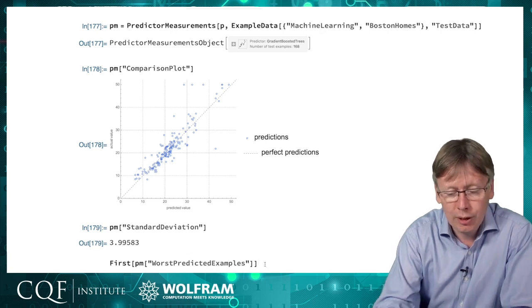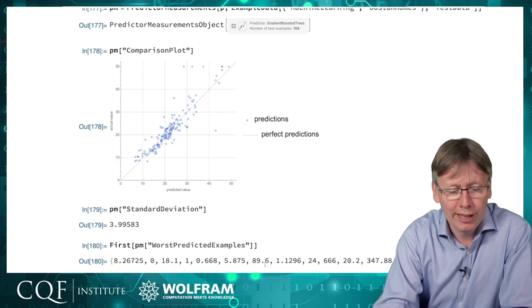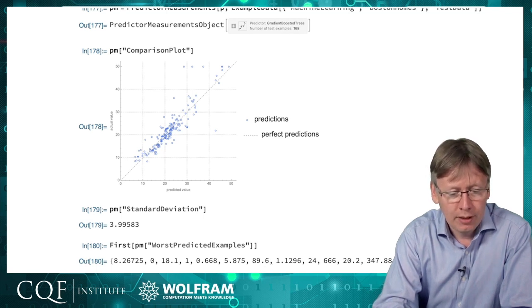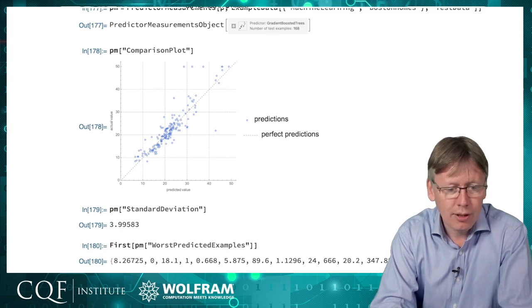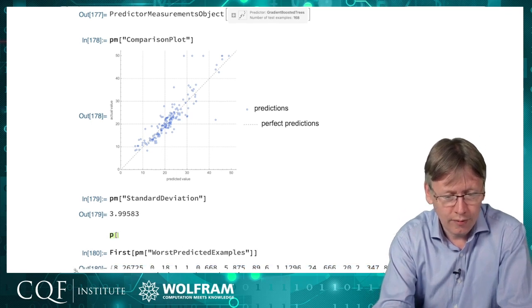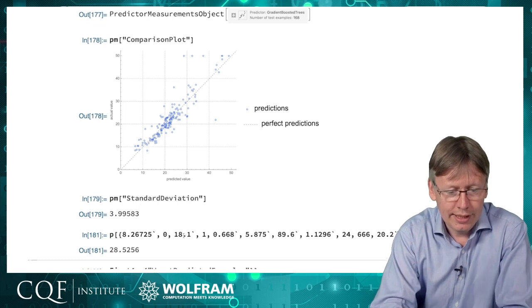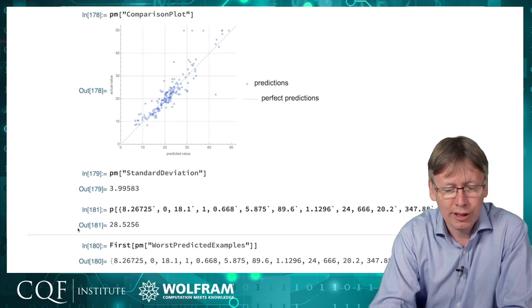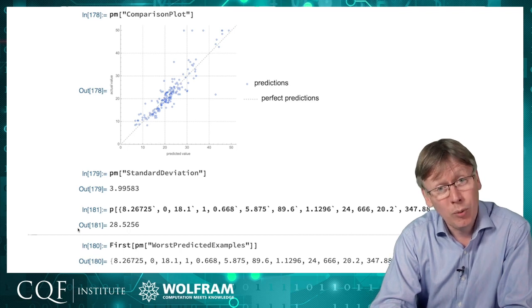Just as we did with classification, we can look up things like best and worst predicted examples. Here's our worst predicted example. Here's the inputs and the actual output. We could compare that to, I guess we could put that straight into the predictor, which was called p. What's p of that value? This actual prediction was 20,000, so that's why it's the worst prediction, because 20 and 50 are quite a long way apart.